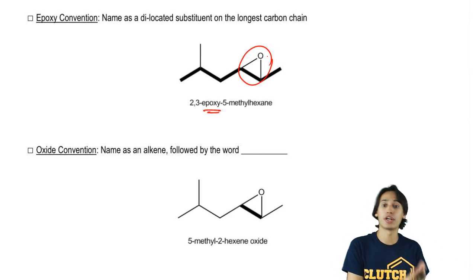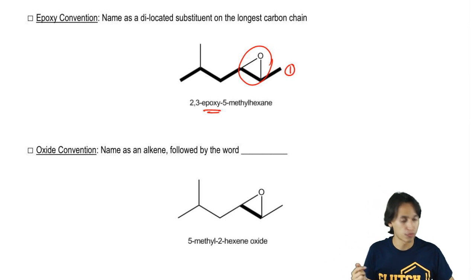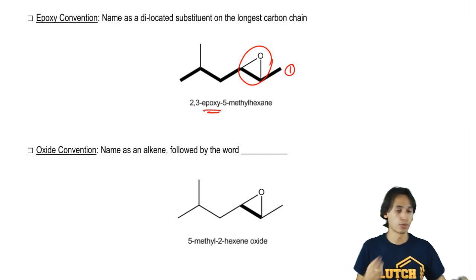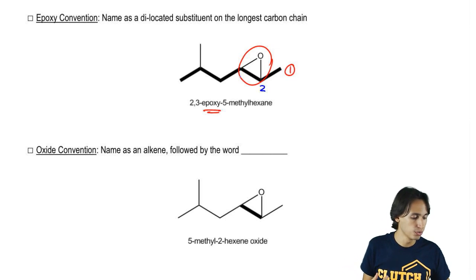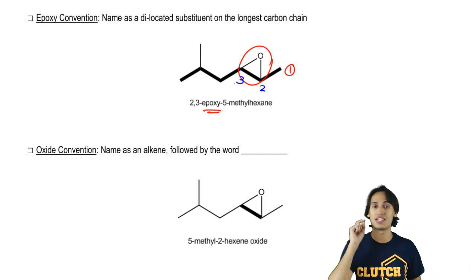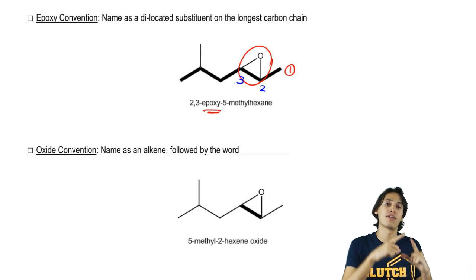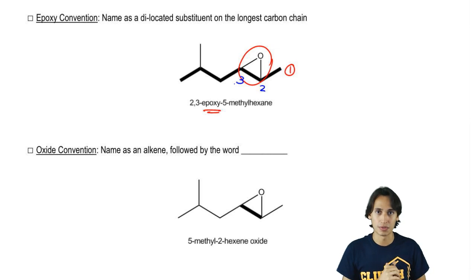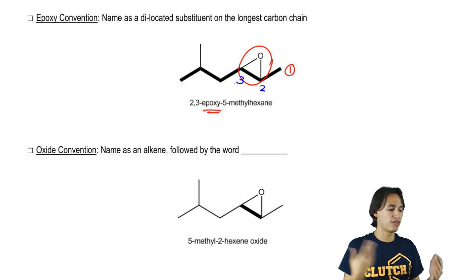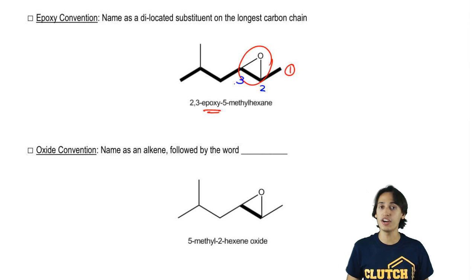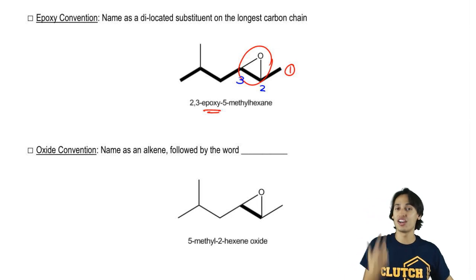So as you can see here, my epoxide is going to get priority over the methyl. So I would choose this to be my first carbon over here. That means that my epoxy group or my epoxy substituent is across the two and the three. Therefore, I'm actually going to call this a 2,3-epoxy substituent because I'm basically saying that I have a bond to O across those two carbons. Then the rest of it we're just going to name like always. So this would be 2,3-epoxy-5-methylhexane. It's just something to consider that you could also use the epoxy convention.